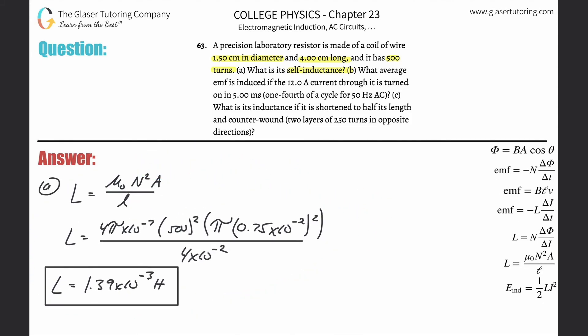Let's look at Part B: What average EMF is induced if a 20 amp current through it is turned on in five milliseconds? The extra information is just noise. It's asking for the average EMF induced.